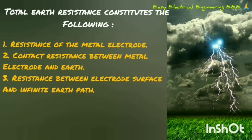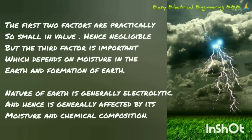Total earth resistance constitutes the following: First, resistance of the metal electrode. Second, contact resistance between metal electrode and earth. Third, resistance between electrode surface and the infinite earth path. The first two factors are practically very small in value, hence may be neglected. But the third factor is important, which depends on moisture in the earth and the formation of the earth.